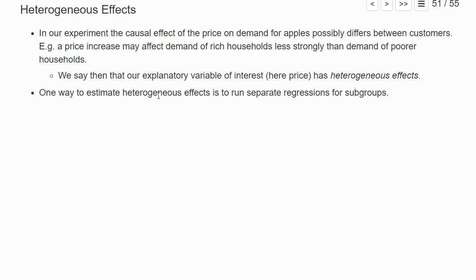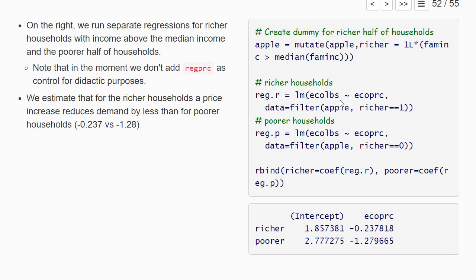I have done so here on the right. I have estimated one demand function only for the richer half of households and one for the poorer half. So here's where I define the dummy richer, which is basically a one if the family income is larger than the median family income. And here I filter basically the richer half in this regression and here the poorer half of the households in the second regression. And here we see the estimated coefficients.